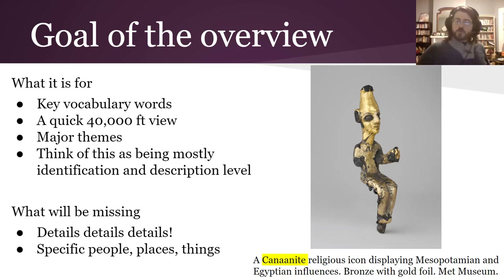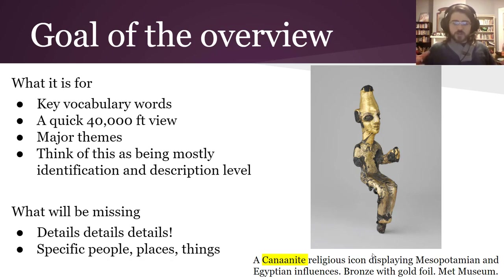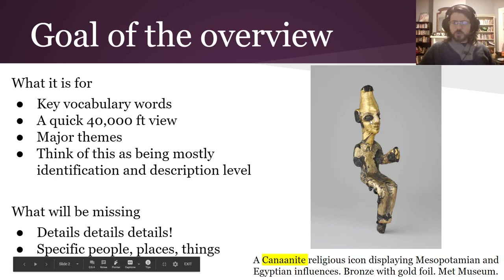Here again is the goal of the overview. This is a Canaanite religious icon, and it has both Mesopotamian and Egyptian influences. That's really important because this region is all about how those two influences play together and how they result in unique outcomes different from both of those other places. This is actually bronze with thick gold foil on it, from the Met Museum.